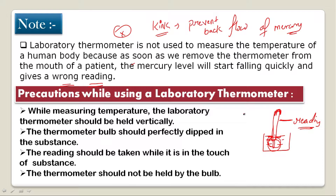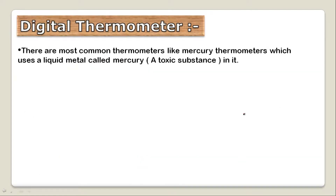The next topic is the digital thermometer. Most common thermometers like mercury thermometers use a liquid metal called mercury, which is a toxic substance. Mercury is toxic, so if someone comes into contact with mercury, they can be harmed or infected.